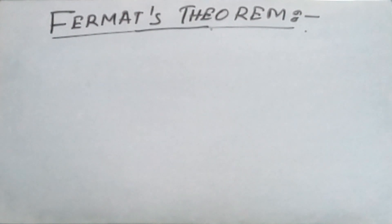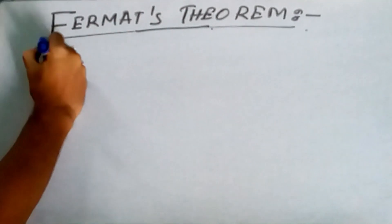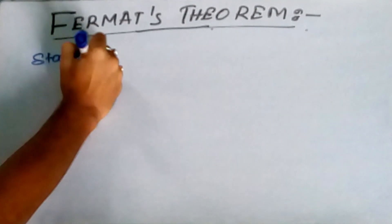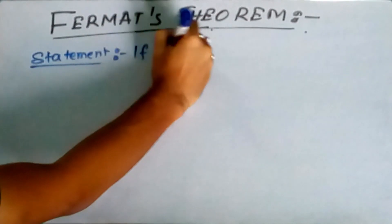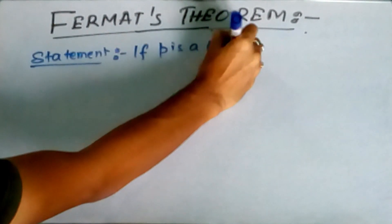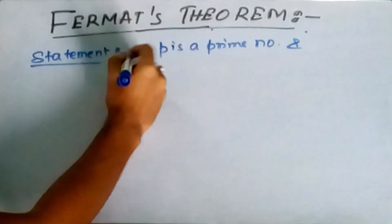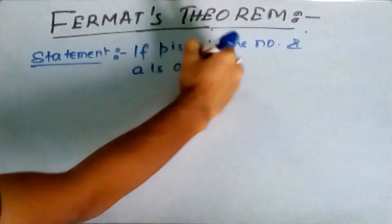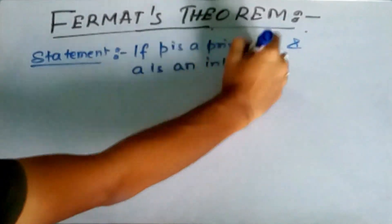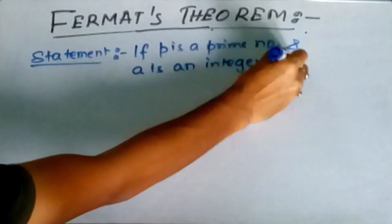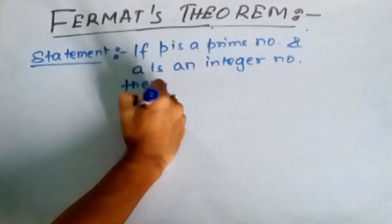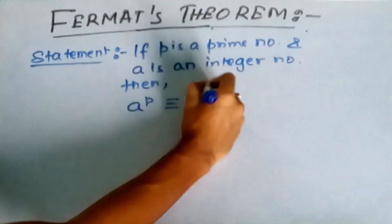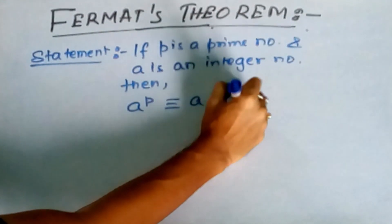So let's start with the statement. What is the statement of Fermat's theorem? It says that if p is a prime number and a is an integer number, then a to the power p is congruent to a mod p.